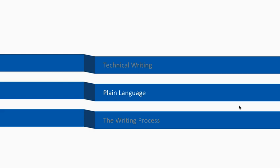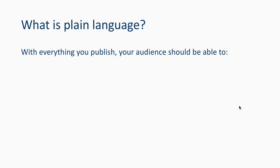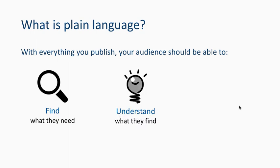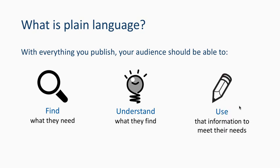Another part of technical writing with a relatively new name is plain language. The idea is that everything you create and publish should allow your audience to find what they need, understand what they find, and use that information to meet their needs. Writers often focus on what they want rather than what their readers need to know or accomplish.